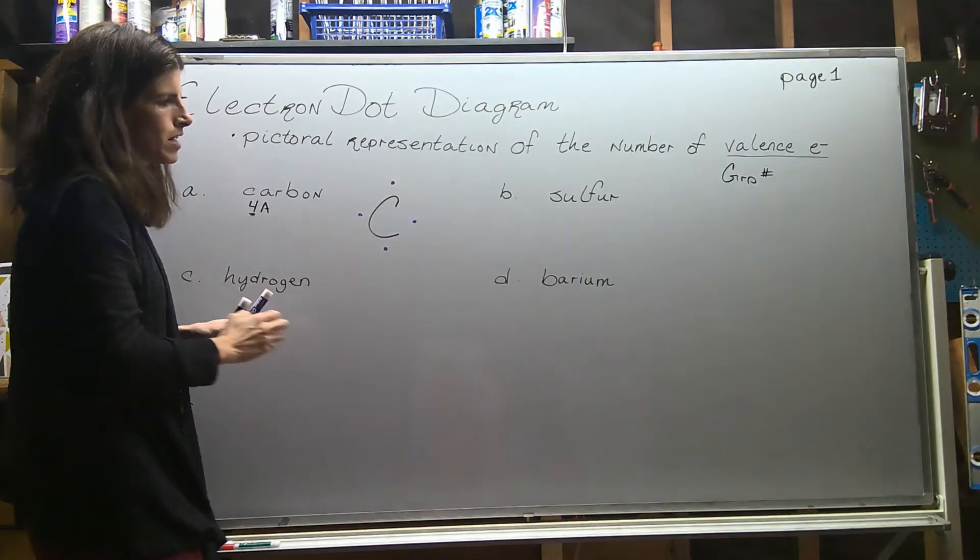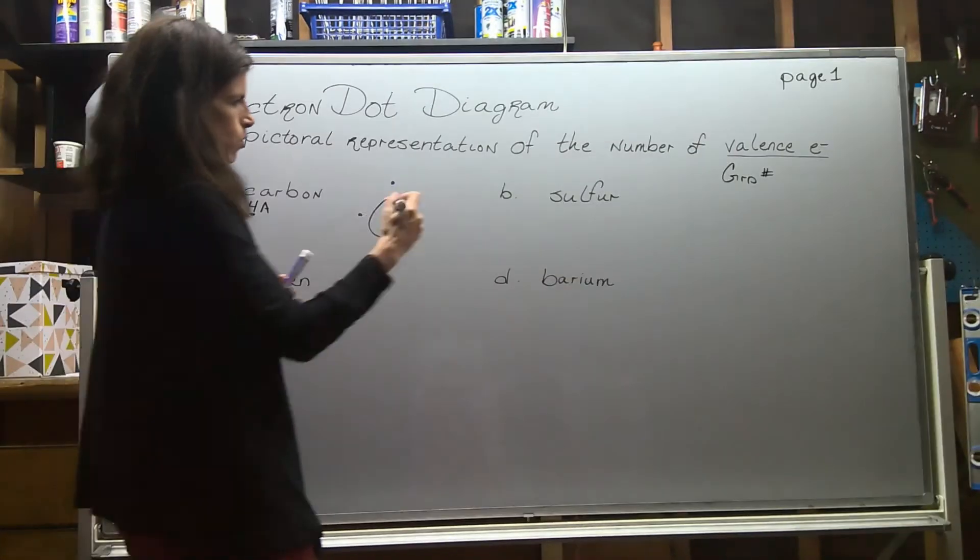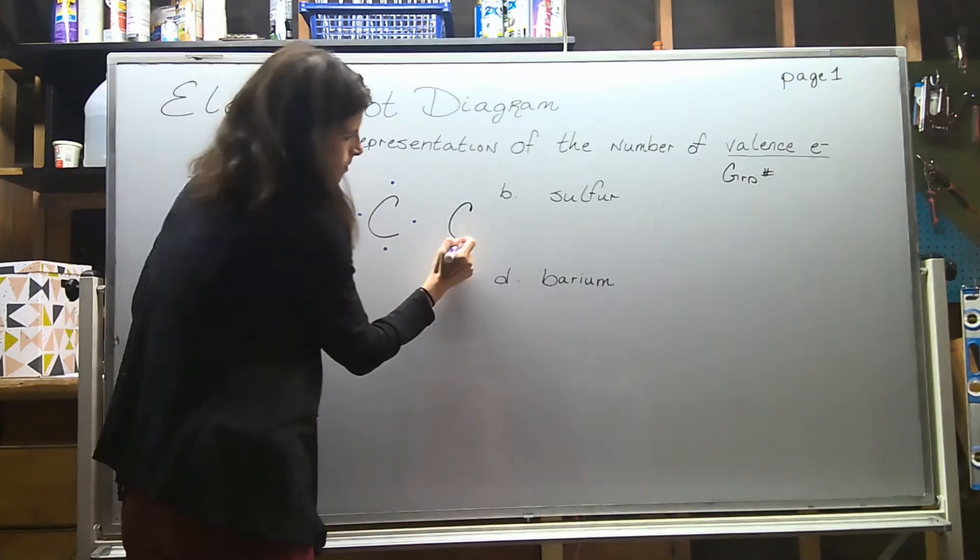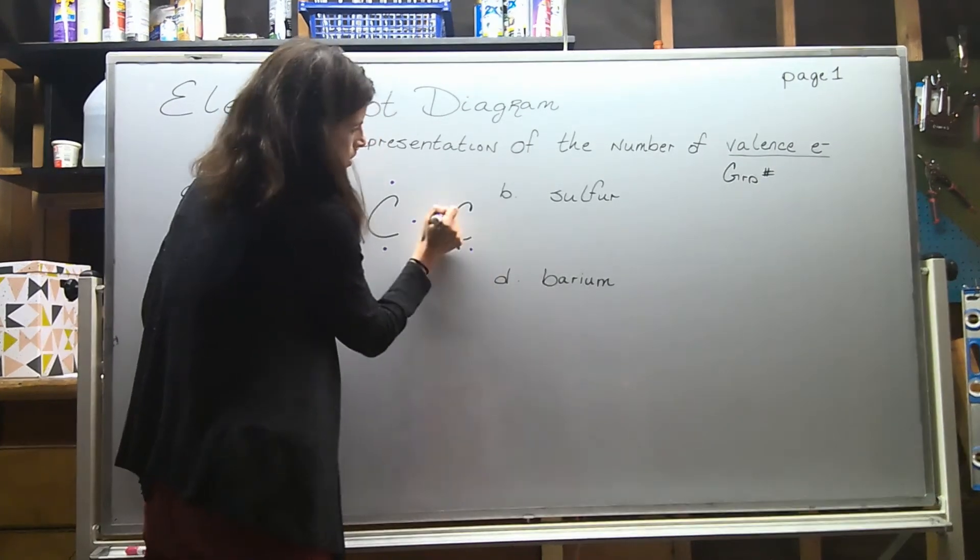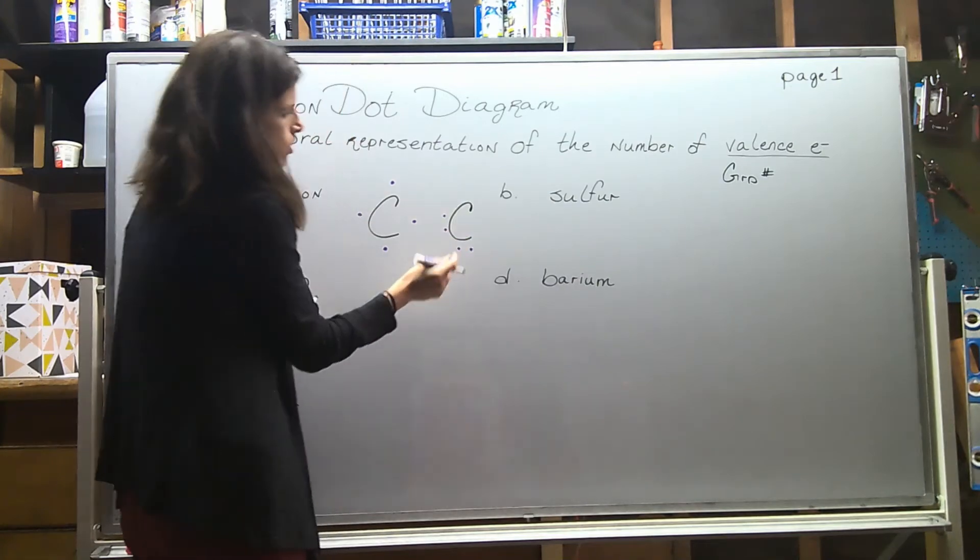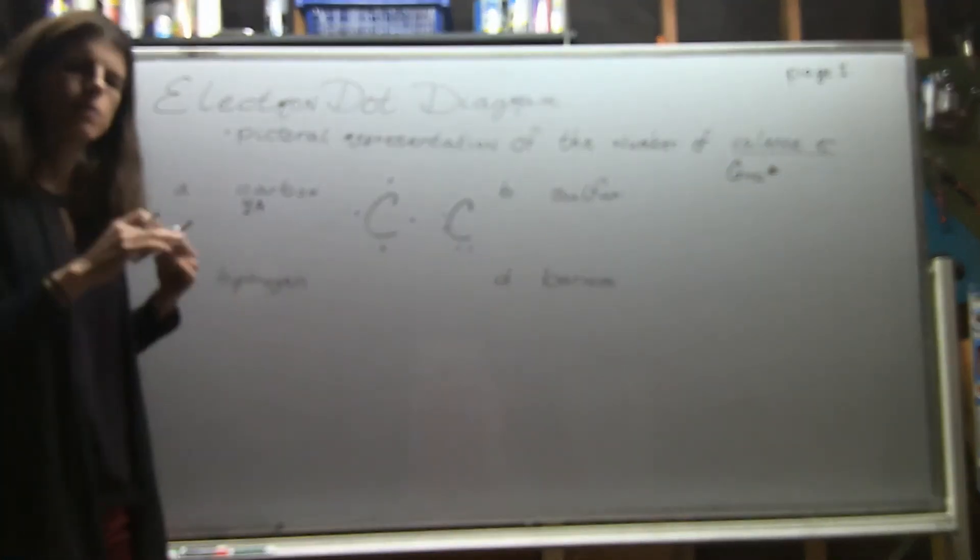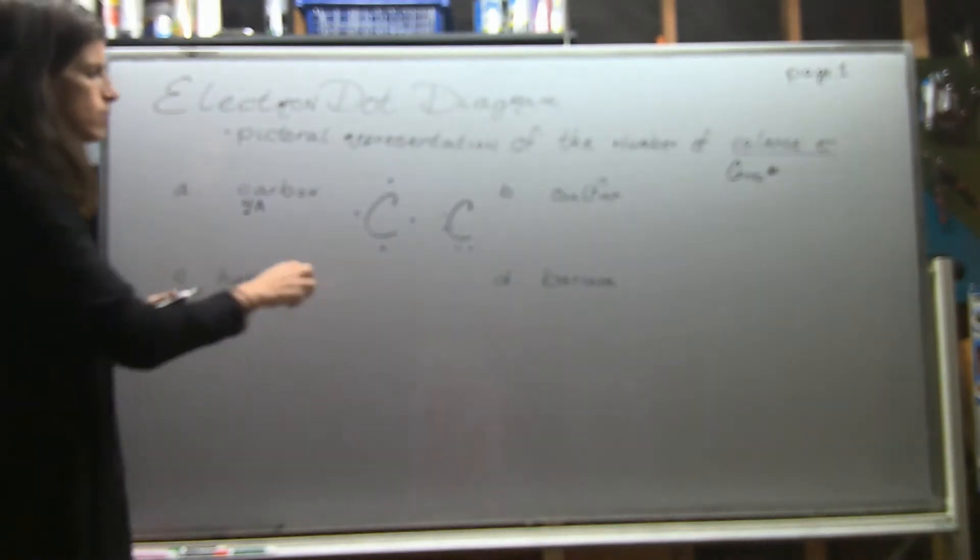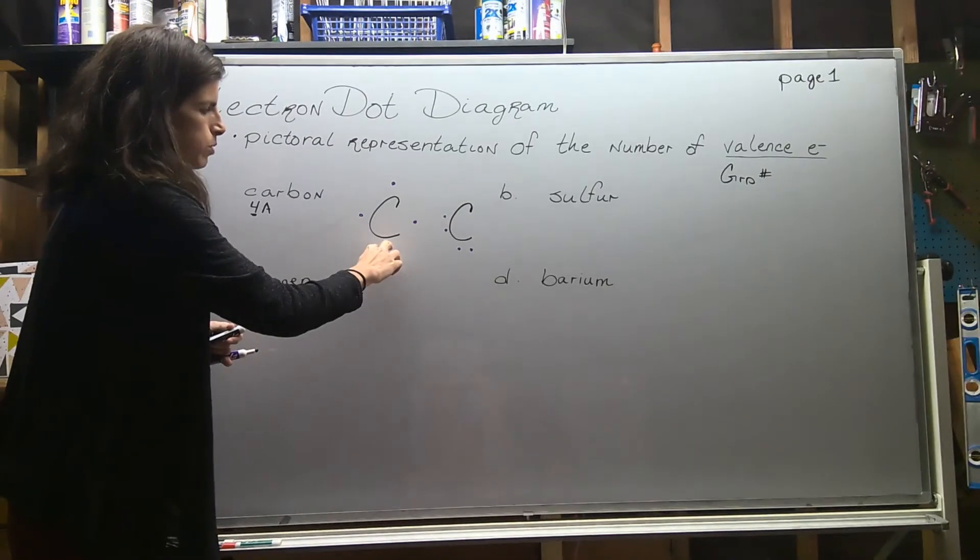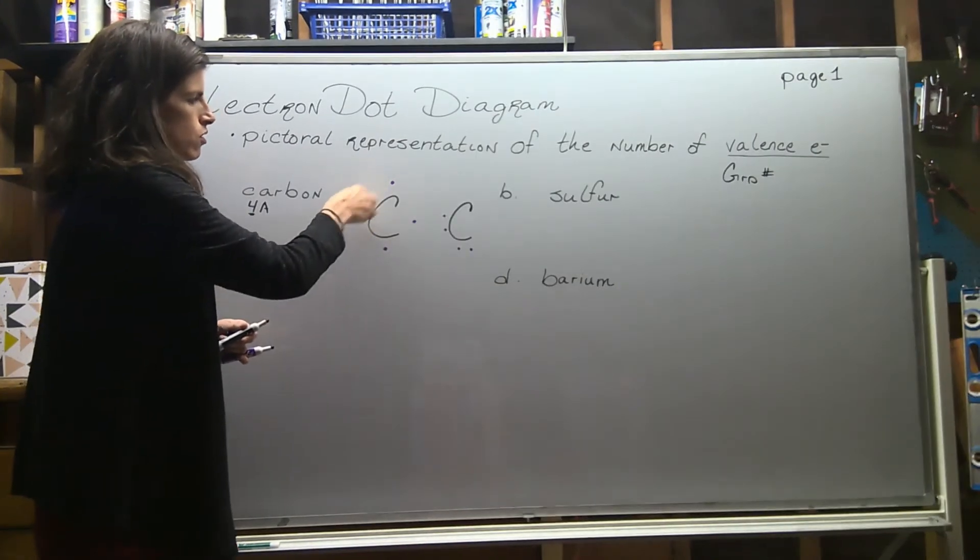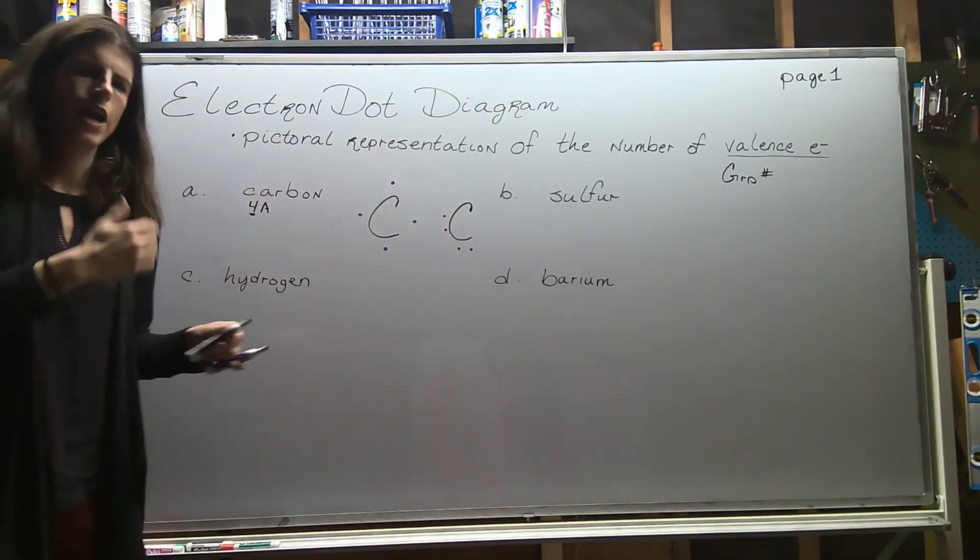The arrangement here doesn't matter. That's an acceptable way to draw it. Somebody might do them in pairs, so they could do two here and two here, or you could do a pair here and a pair here. Typically, though, as we get into these, what you're going to see is that we kind of just put two on each side, so maximum of two on each side - two, two, two, two if we had to go up to eight.